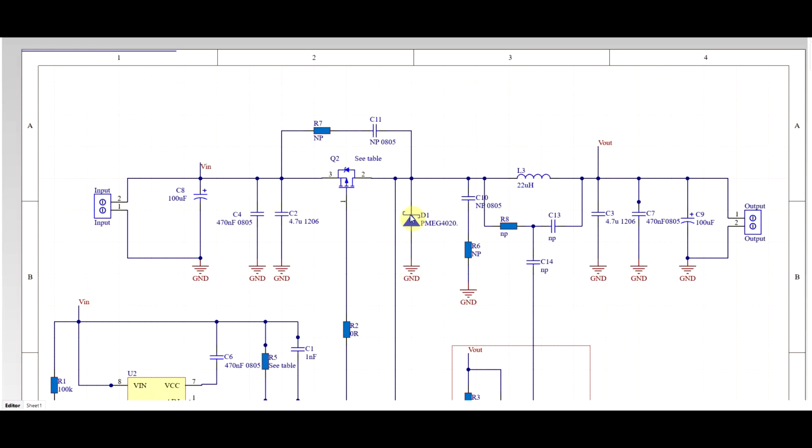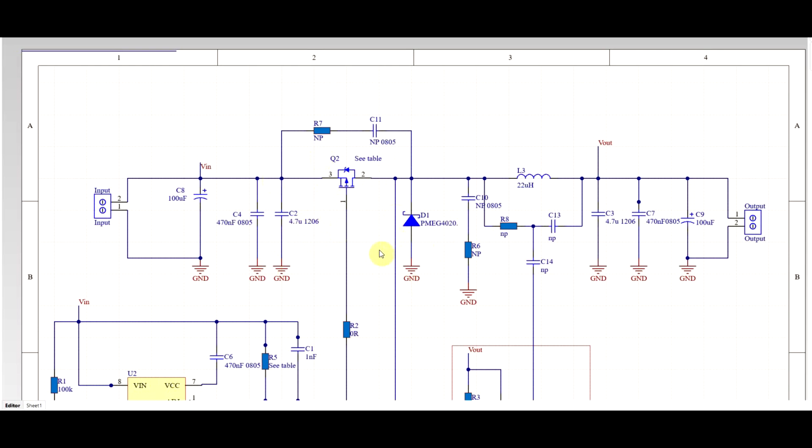which have a direct impact on the parasitic inductance of interest in our switching converter. So first of all is the size of our hot loop. The loop formed between the switching transistor, the diode, and in this case the input capacitors. Ideally you want to have this loop physically as small as possible to reduce the loop inductance.